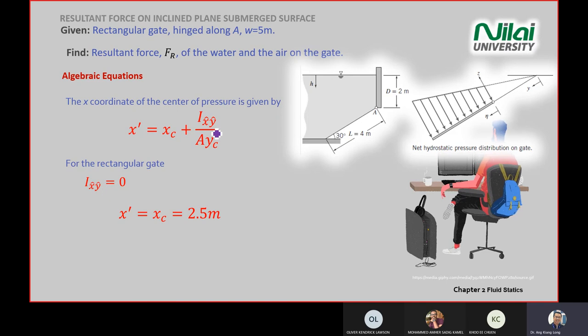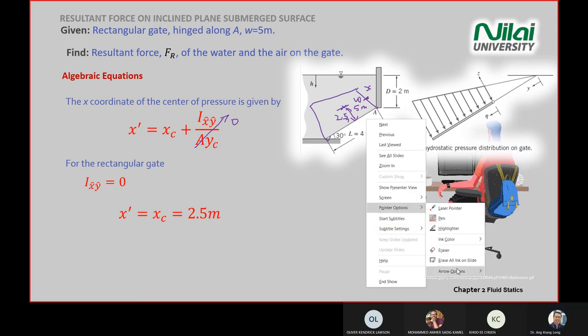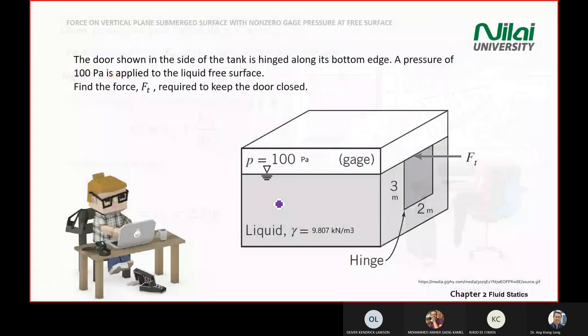So if your IXY equals zero, so this one goes to zero. You only left up to the X centroid, which is 2.5 meter. Okay. Because your width, your X, your X will be the X of the plate is your width, which is 5 meter. So half of your centroid, half of the plate will be your centroid. So you will be 2.5 meter. So you find your X prime in this way.